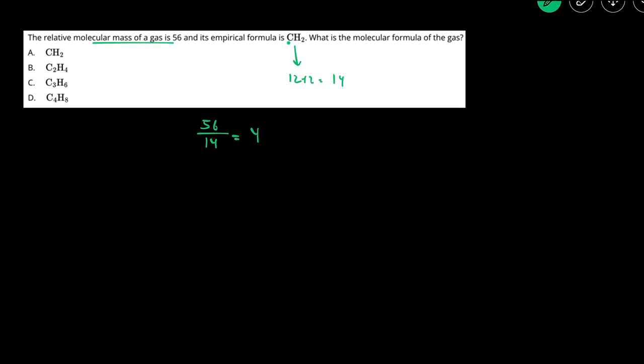That just means that the molecular formula is going to be the empirical formula multiplied by 4. So then there should be 4 carbons and 8 hydrogens. So the answer here will be D.